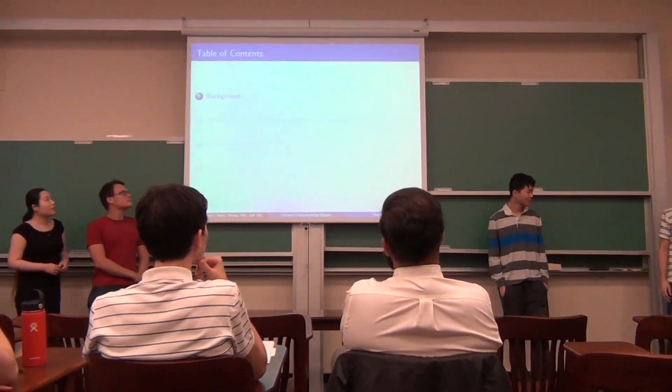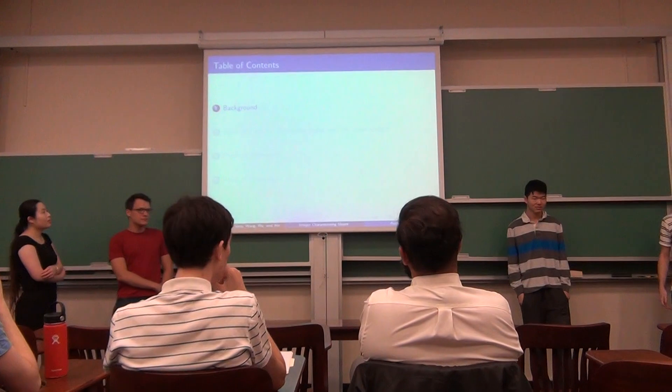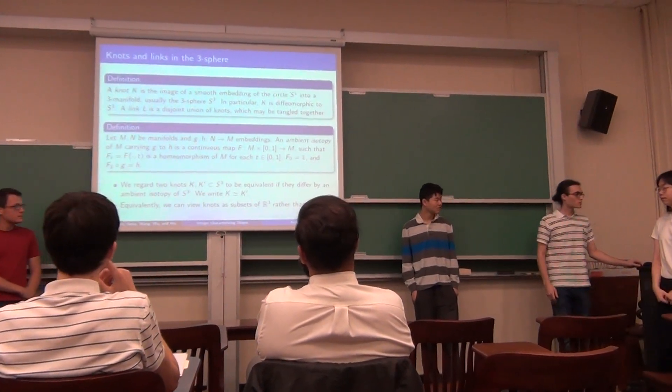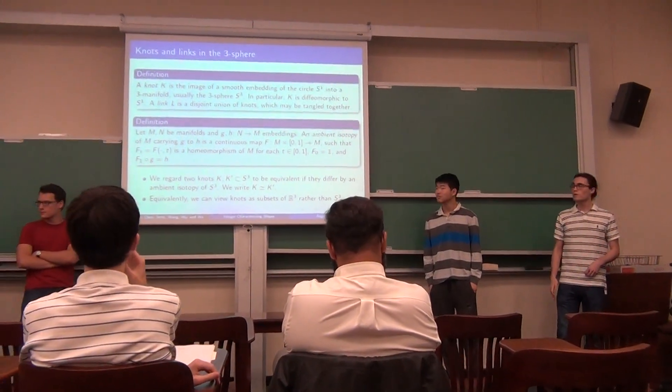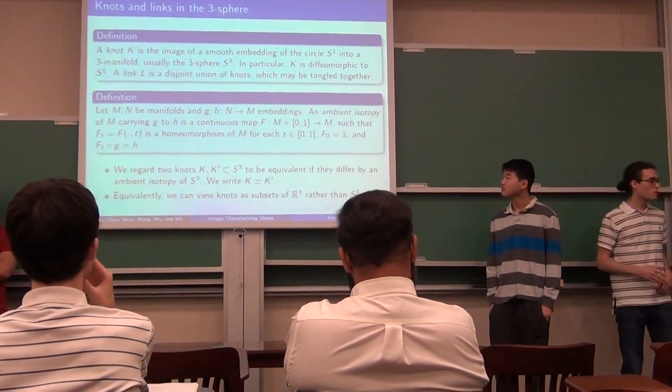So to begin, we're just going to give some basic definitions from knot theory and topology that we'll need. A knot is just a smooth embedding of the circle S¹ into the three-sphere S³. You can also take R³ instead. They're more or less equivalent.